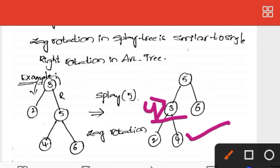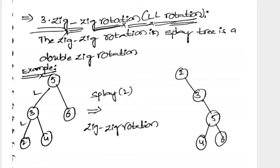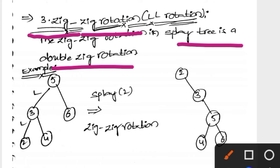The next rotation is the zig-zig rotation, which is the left-left rotation. This is a double rotation, meaning we perform the rotation two times. For example, consider an example tree.